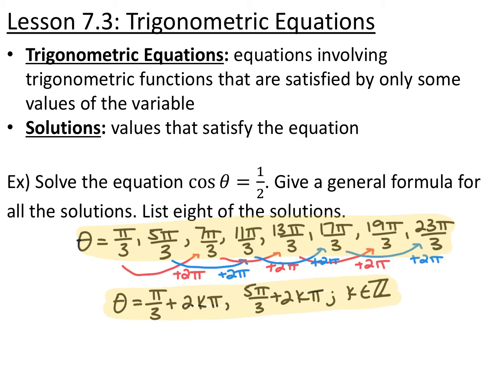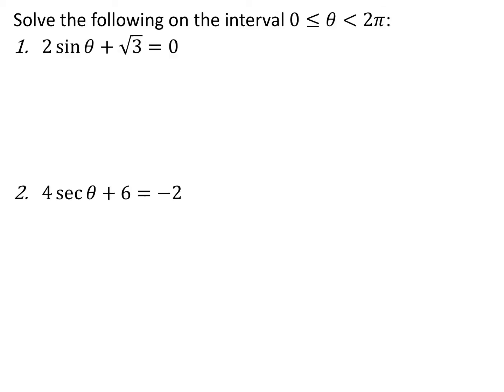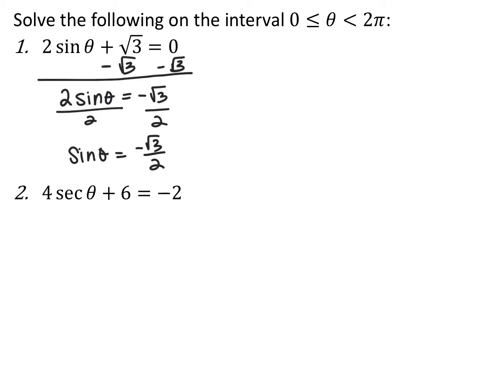We're looking for the angles that make this specific equation true. For the next two problems, they specifically ask for angles between zero and two pi only — not a specific number, not the general formula, just those that fall in that interval. We have two sine theta plus root three equals zero, and four secant theta plus six equals negative two. Just like any other equation, we isolate the trig function first. Subtracting root three and dividing by two gives sine of theta equals negative root three over two, so theta is four pi over three and five pi over three.